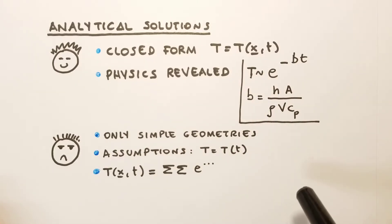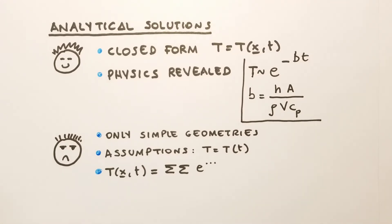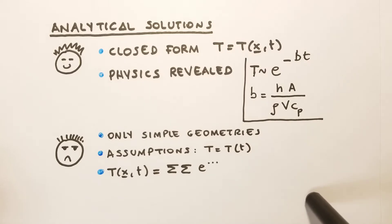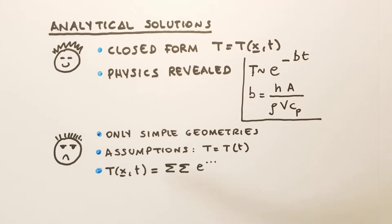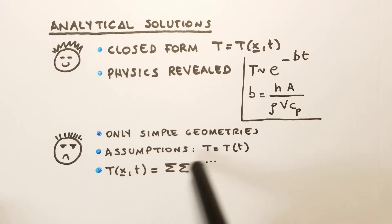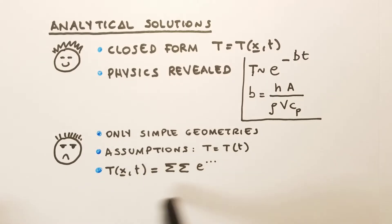But there are certainly disadvantages. We can only treat simple geometries, for example the plane wall, the cylinder, or the sphere. We had to rely on assumptions, for example the one-dimensional assumption or the lumped system analysis assumption. And finally, for some transient cases where the temperature depended on time and one coordinate, we found that the temperature had to be expressed in series form, so we had to rely on computer code to compute these complicated series anyway.